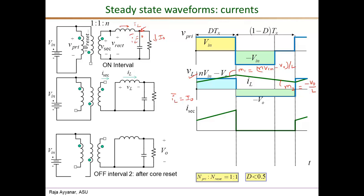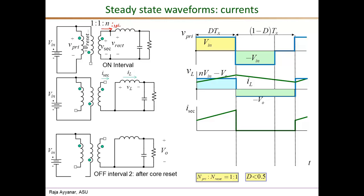The next waveform is i_secondary, the current leaving the secondary winding. During the on interval i_secondary equals i_L exactly. During the off intervals diode D1 is off, so i_secondary is zero for the entire off interval. The average of i_secondary, similar to the input current of a buck converter, is D times I_o.